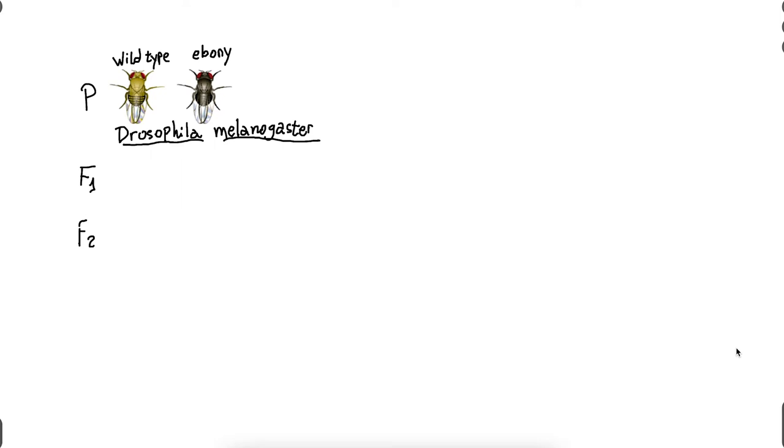It's a tiny fly widely used in genetic studies. Now, today we're going to look at the wild type, that means the standard with no mutations, and this other one called ebony, because it has a mutation that makes it dark. So I have here my parental generation, my P generation. They are homozygous animals, and I'm going to cross a wild type with an ebony fly.